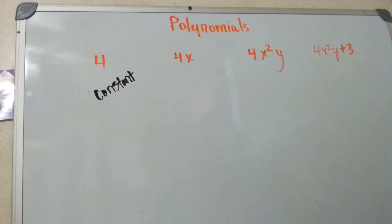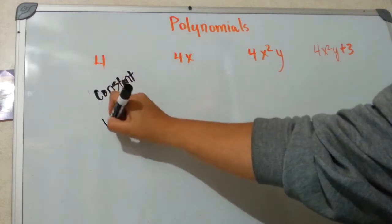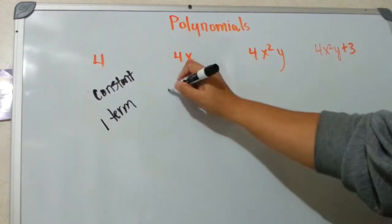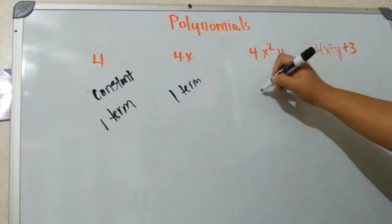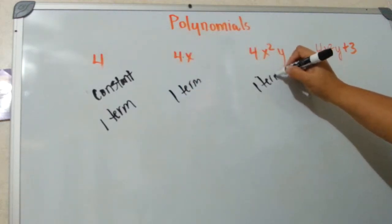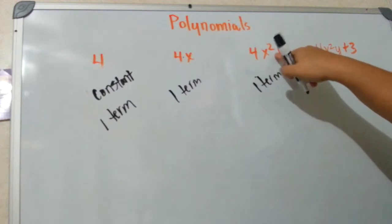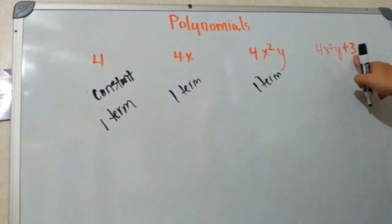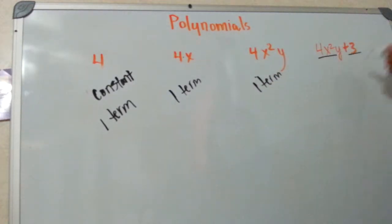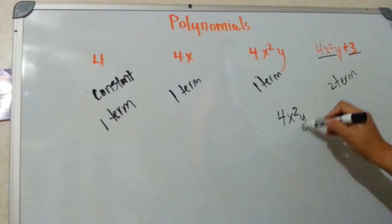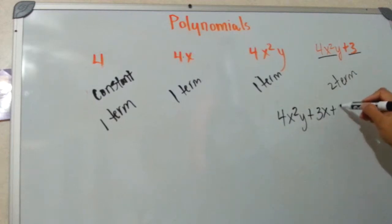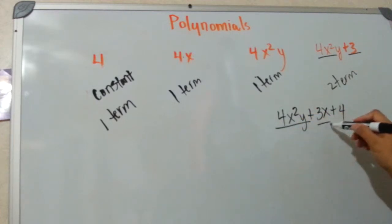We're going to get into all those names. We can think of this in terms of number of terms. This one has one term — one thing even though they're multiplied. Even though you've got two variables, there's no plus sign, so it's still one term. This one is two terms: term one, term two. You can also have three terms — term one, term two, term three.